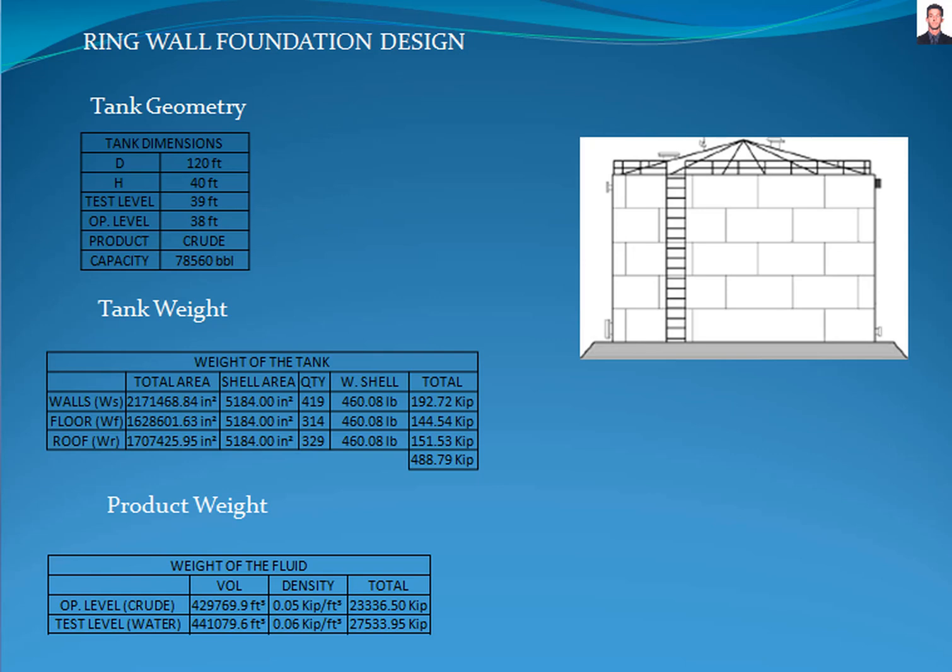In this tutorial, we are going to design a ring wall foundation according with the American Petroleum Institute API 650 standard for a tank with a capacity of 78.5 thousand blue barrels.